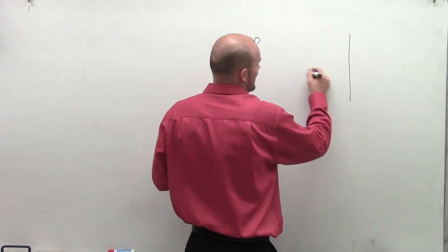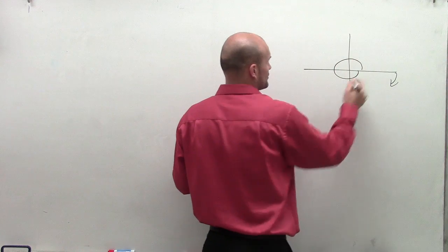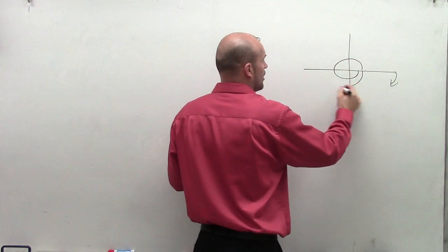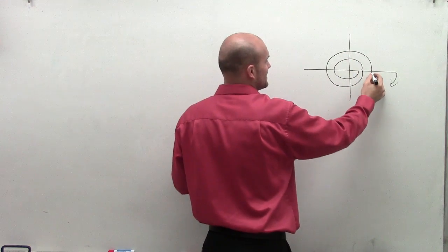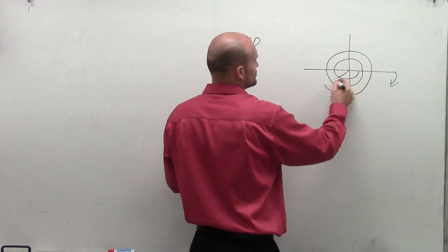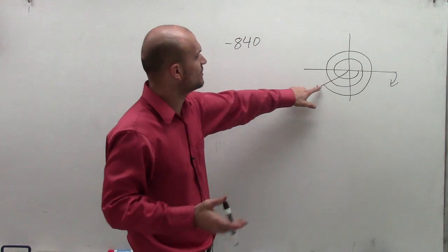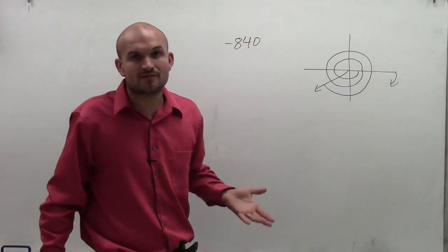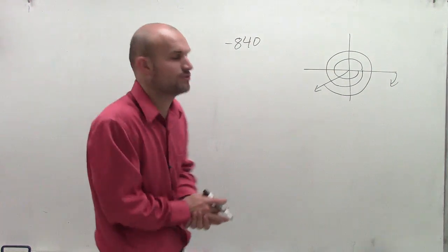Now to do that, remember we're going in the negative direction. So if I go all the way around a circle, that's negative 360. I'll continue around again, that's going to be negative 720. And then negative 120 degrees is going to be an extra negative 120 degrees, which will be negative 840 degrees collectively, negative 360 plus negative 360 plus negative 120.